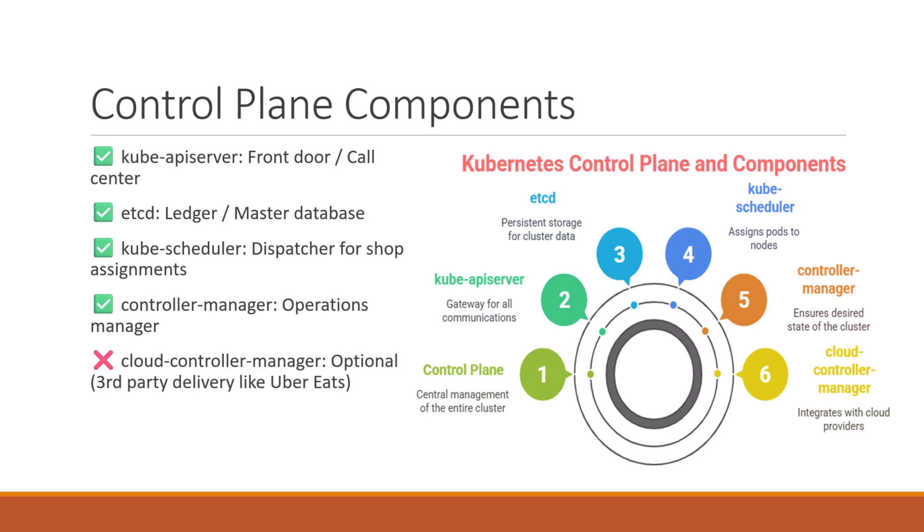Next is etcd — this is the company notebook. It stores all the important data like receipts, staff rosters, and orders. Next is the kube scheduler, which decides which pizza shop should handle a new order — basically the dispatcher.